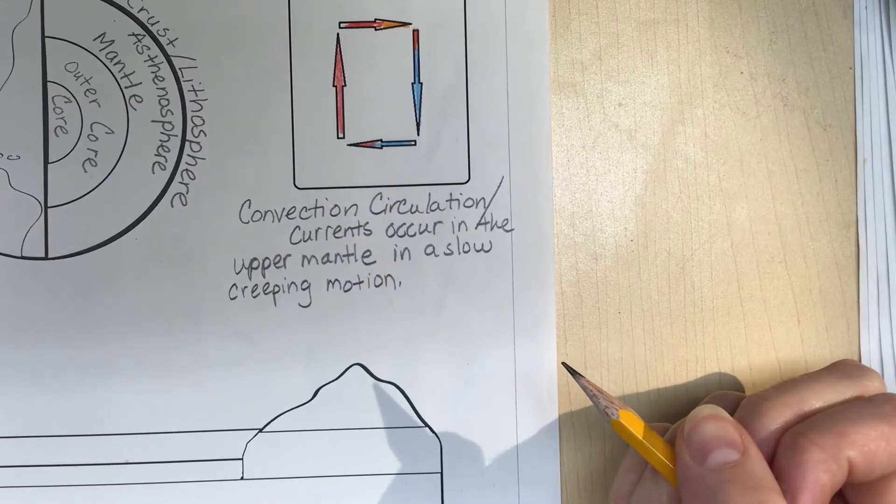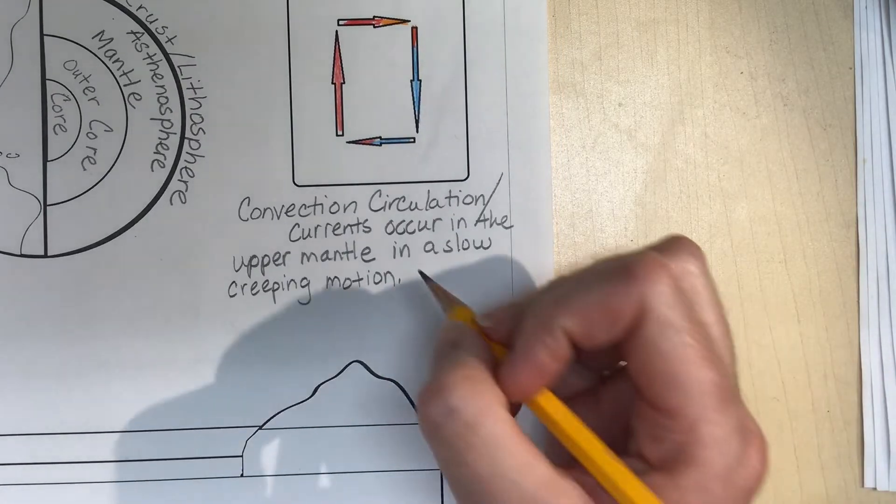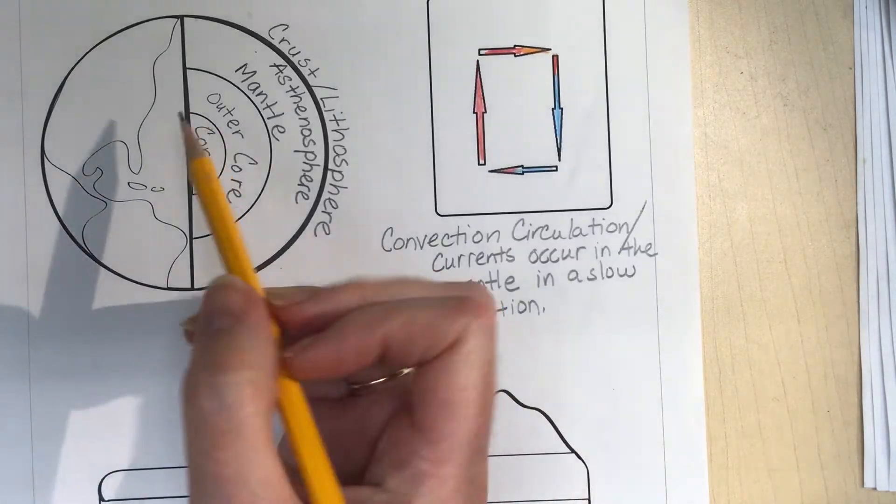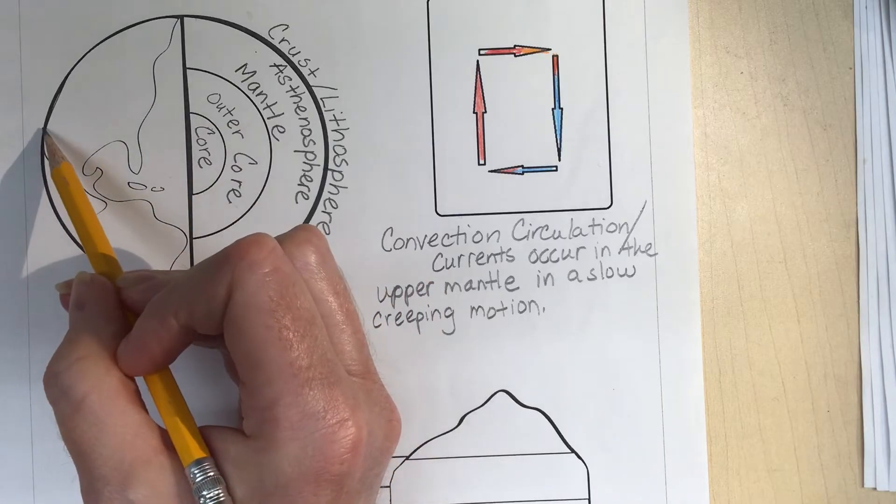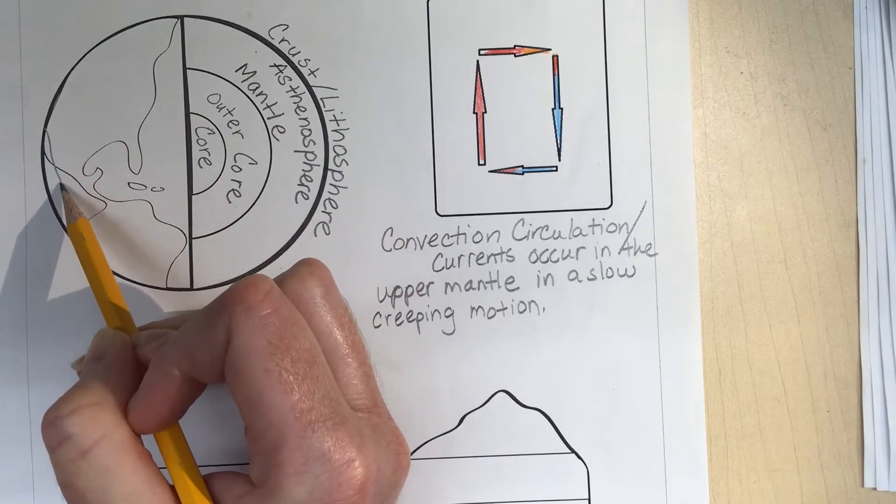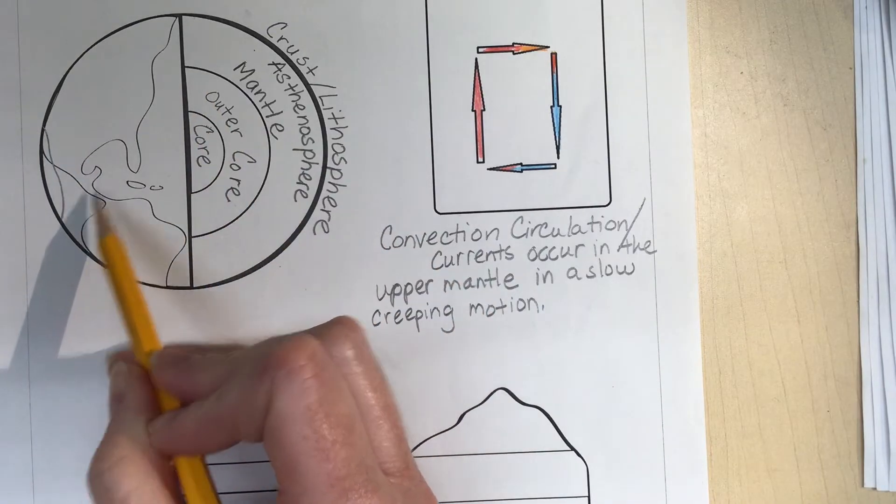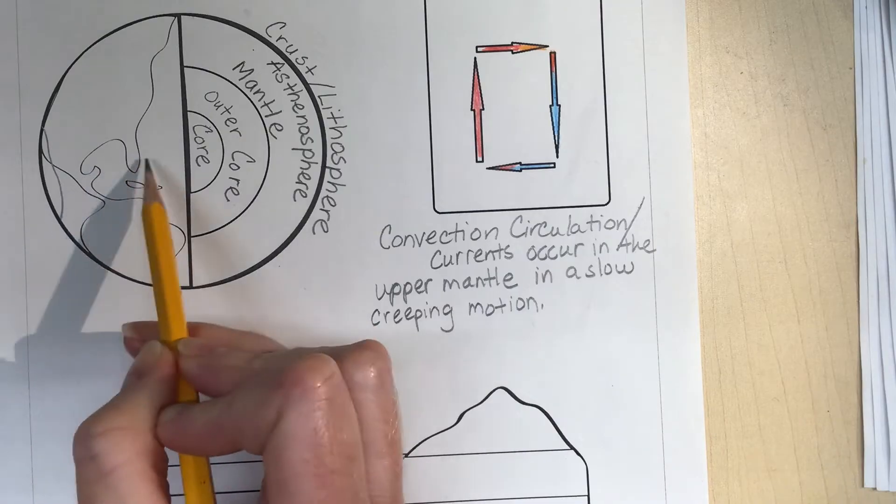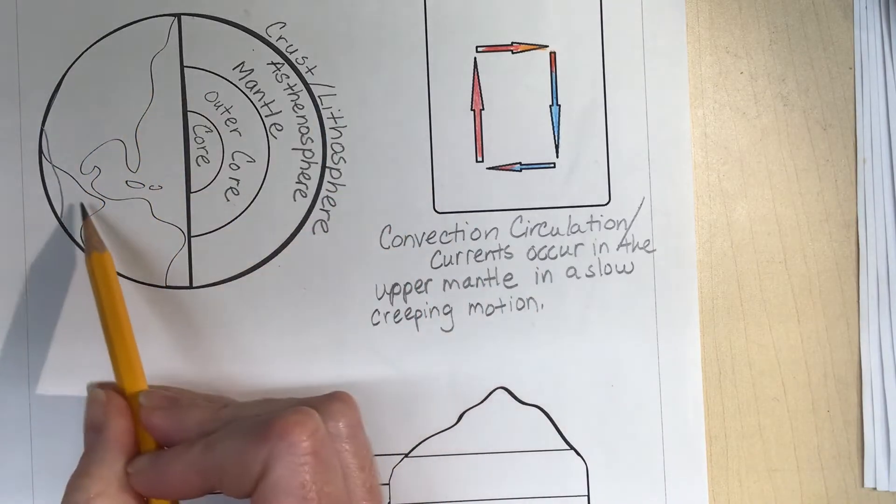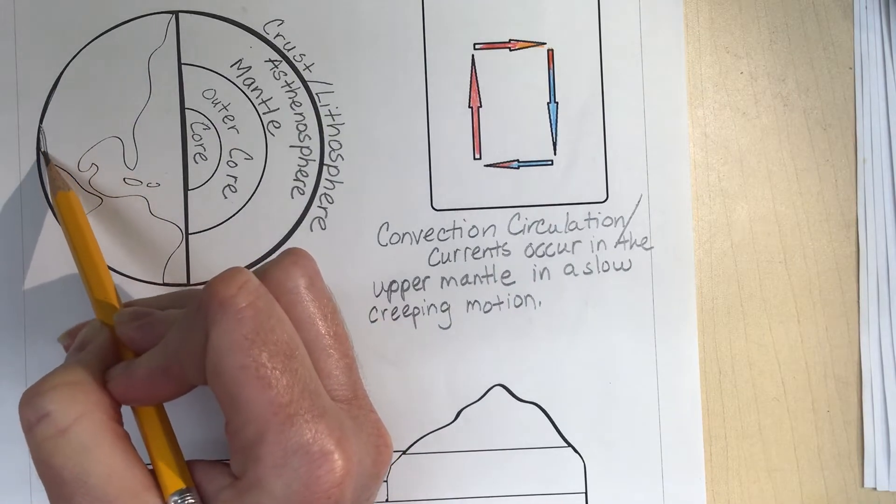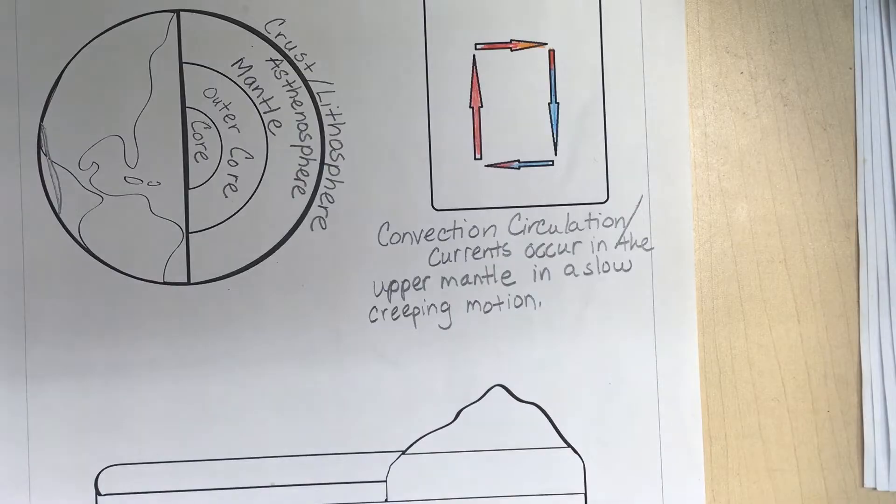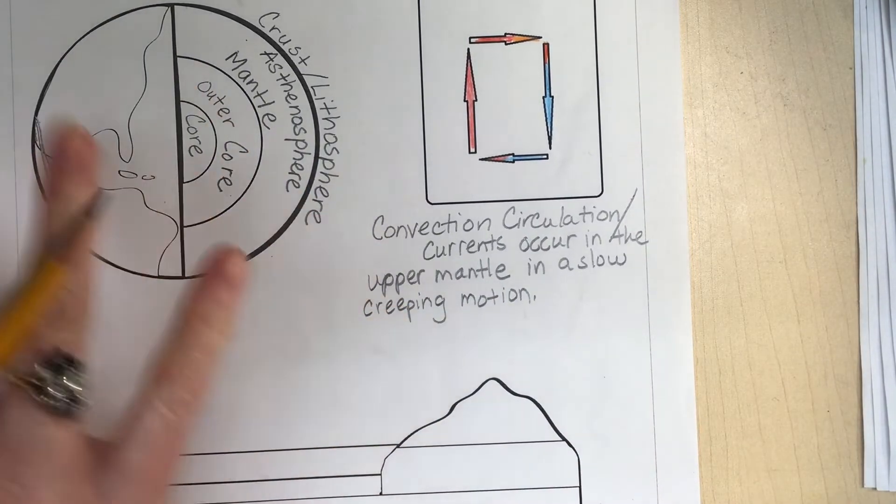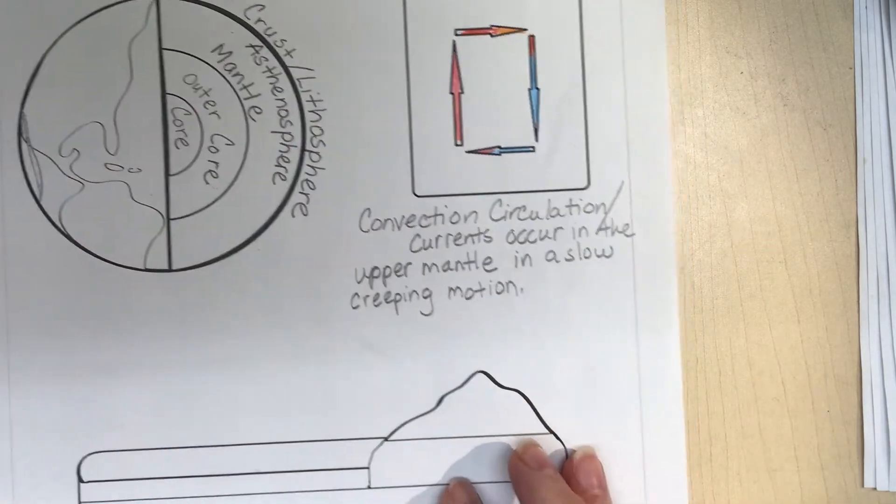...in a slow creeping motion. This is not happening very fast at all. As it's doing it, it breaks the plates and moves them. The Earth's crust is divided into plates. We have these plates that divide the Earth - this would be North America, South America. One plate boundary goes through California here. The Earth's crust, the whole Earth, is divided into these sections called plates.